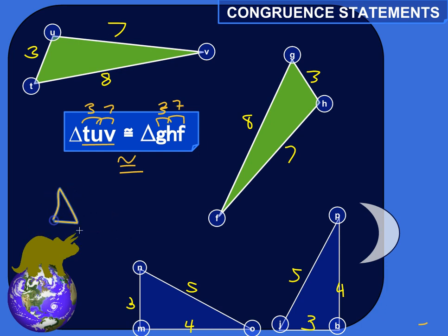So let's just write the congruence statement that says this explicitly. So we've got triangle, and it doesn't matter what order you do the first triangle in. Pick an order, and then follow that order with the second triangle. So I'm just going to be boring. I'm going to go in alphabetical order. Triangle M, N, O.